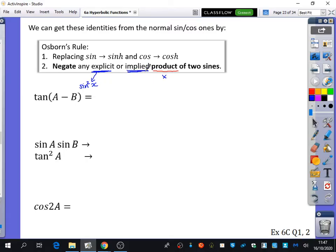But it also says that it could be implied product of two sines. What does that mean, Ishak? No, tan squared of it. Good, because tan squared of x,